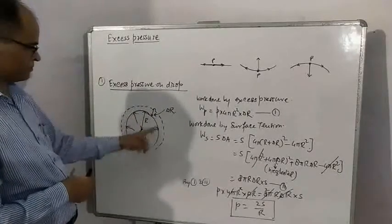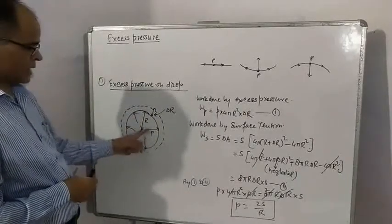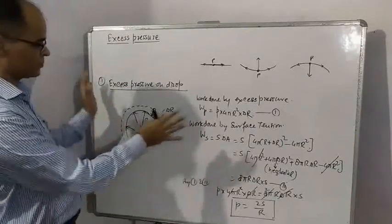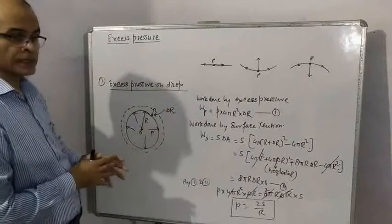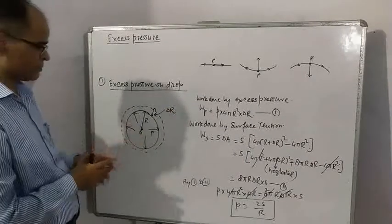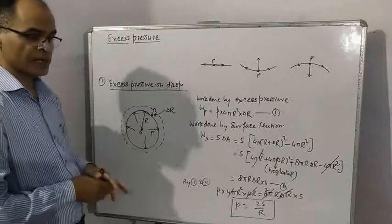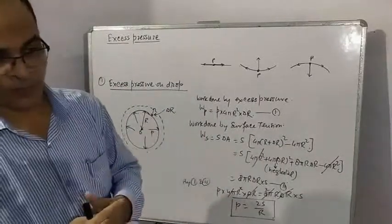Suppose it is a drop. Direction of excess pressure is towards convexity, means it is trying to increase the surface area or size of the drop.